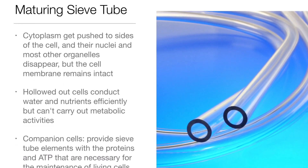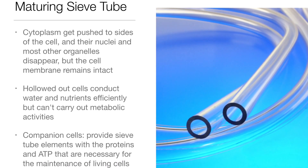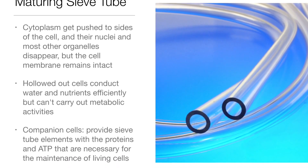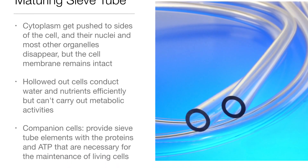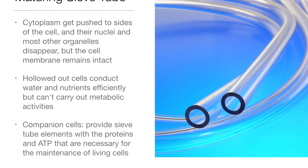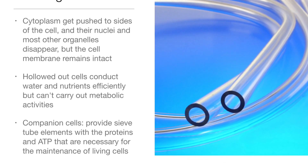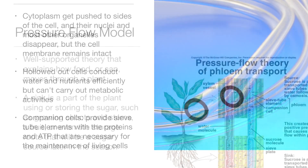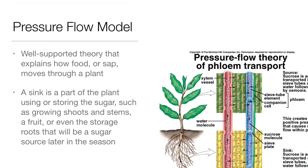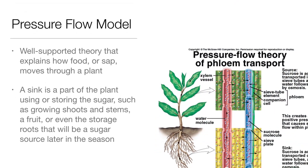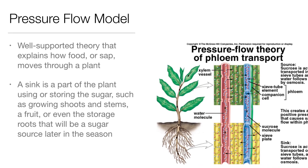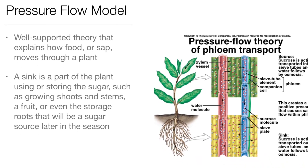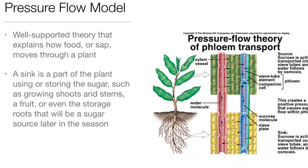The hollowed-out cells conduct water and nutrients efficiently but cannot carry out metabolic activities. Companion cells provide sieve tube elements with the proteins and ATP necessary for the maintenance of living cells. The Pressure Flow Model is a well-supported theory that explains how food or sap moves through a plant.